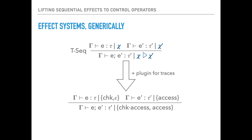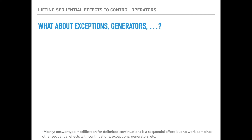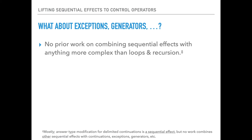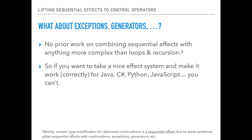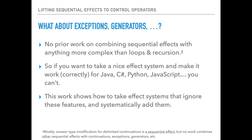So that's great, and we can make this work for the lambda calculus. We can get polymorphism working, while loops working, recursion. But when we take this and we want to adapt it to modern mainstream languages, we get stuck. The problem is that there's really no prior work on combining these sequential effect systems with anything beyond loops and recursion. There's one sort of exception, which is that answer type modification for delimited continuations is itself an example of a sequential effect system. But there hasn't been any work on how to actually combine other sequential effect systems with delimited continuations. So right now, if you want to take some nice effect system from literature and make it work correctly for Java, C#, Python, JavaScript, or any of these other languages with exceptions or generators, basically you can't.